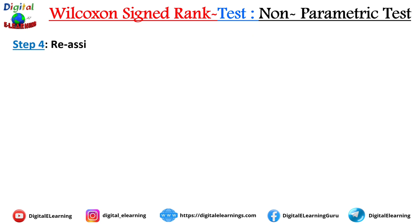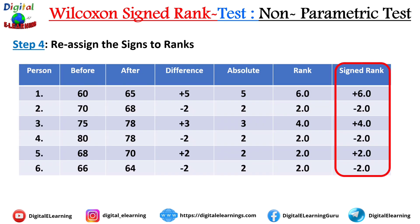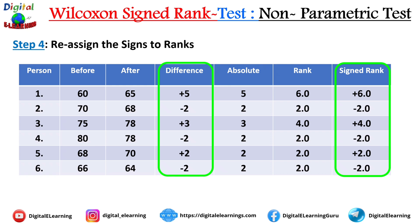Step 4: reassign the signs to the ranks. You have the ranks in a column, and you assign the sign rank based on the sign in the difference column. For example, if the first person's difference is +5, the sign rank is +6. If the second person's difference is -2, the sign rank is -2.5. Whatever sign appears in the difference column, apply that same sign to the corresponding rank.